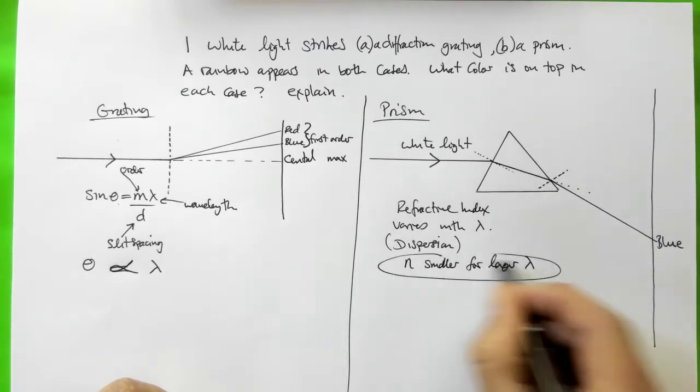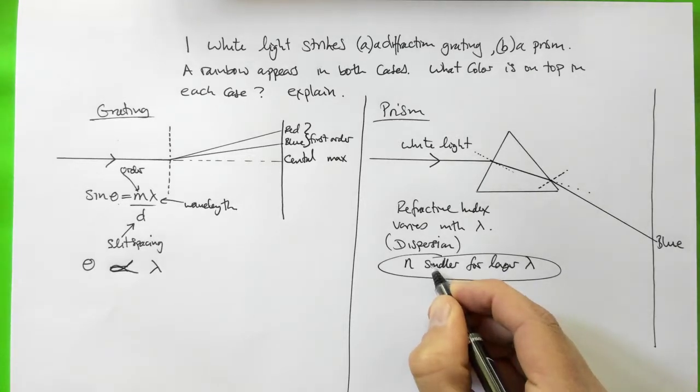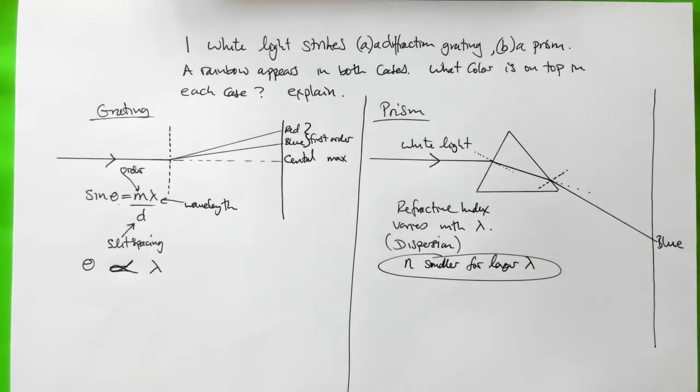There isn't some special equation for that, at least there isn't at this level of studying physics. So for smaller refractive index at larger wavelengths.